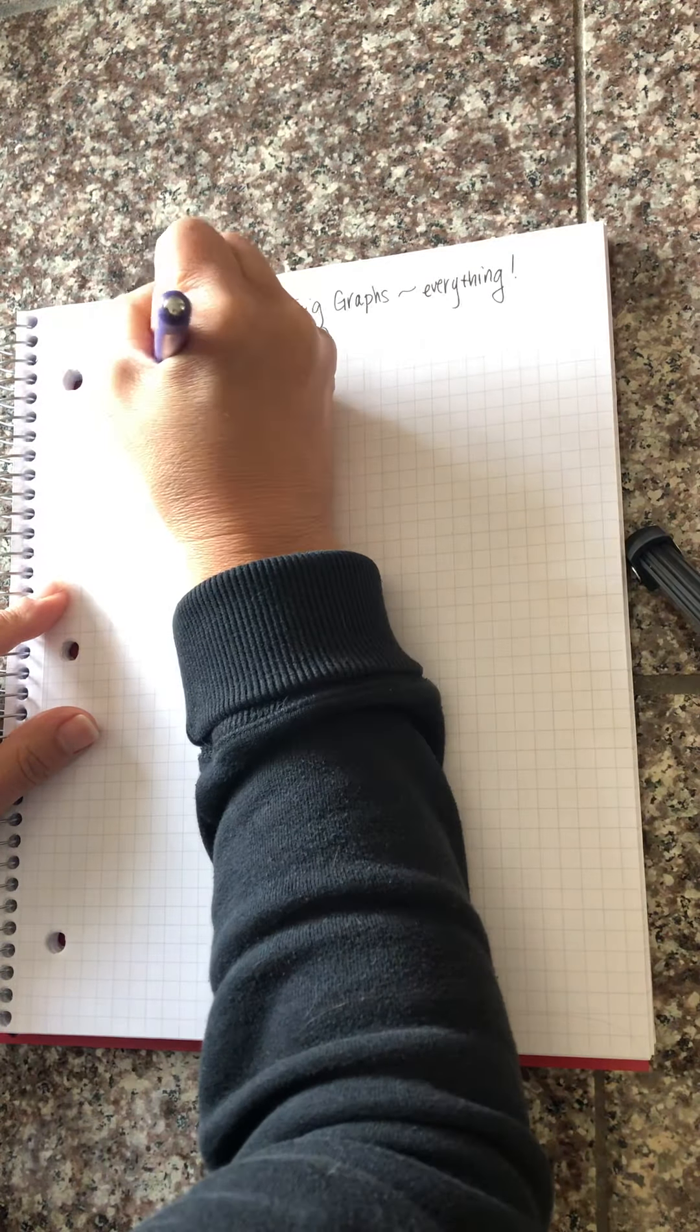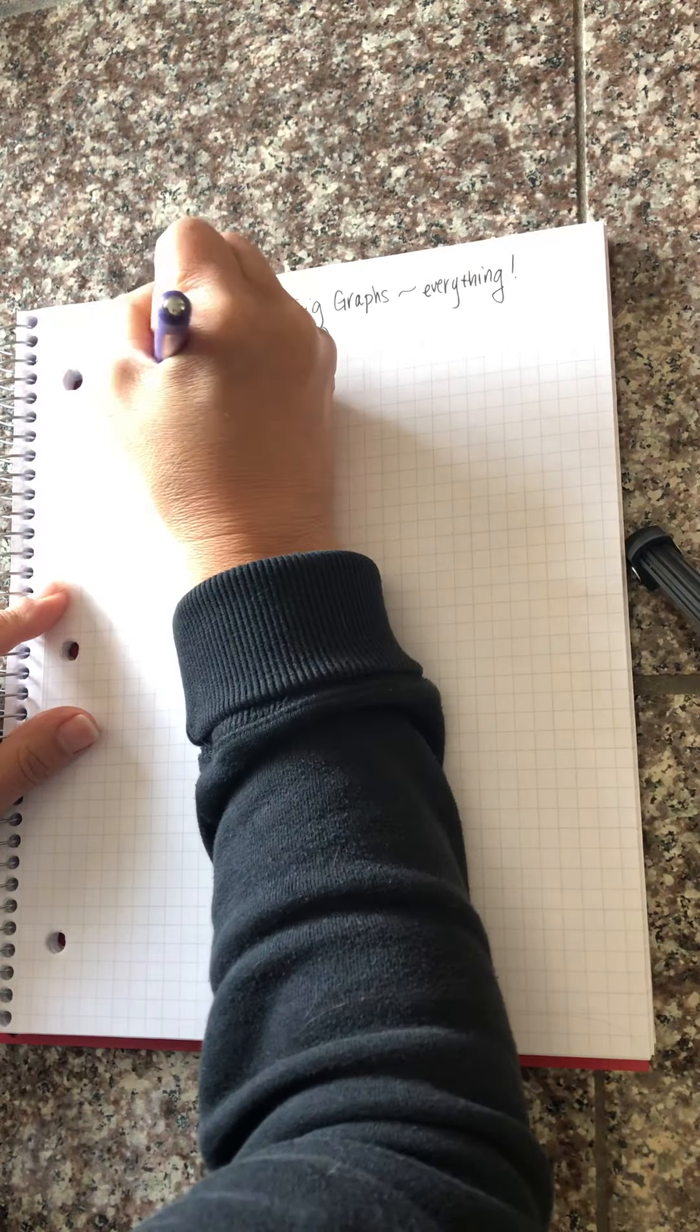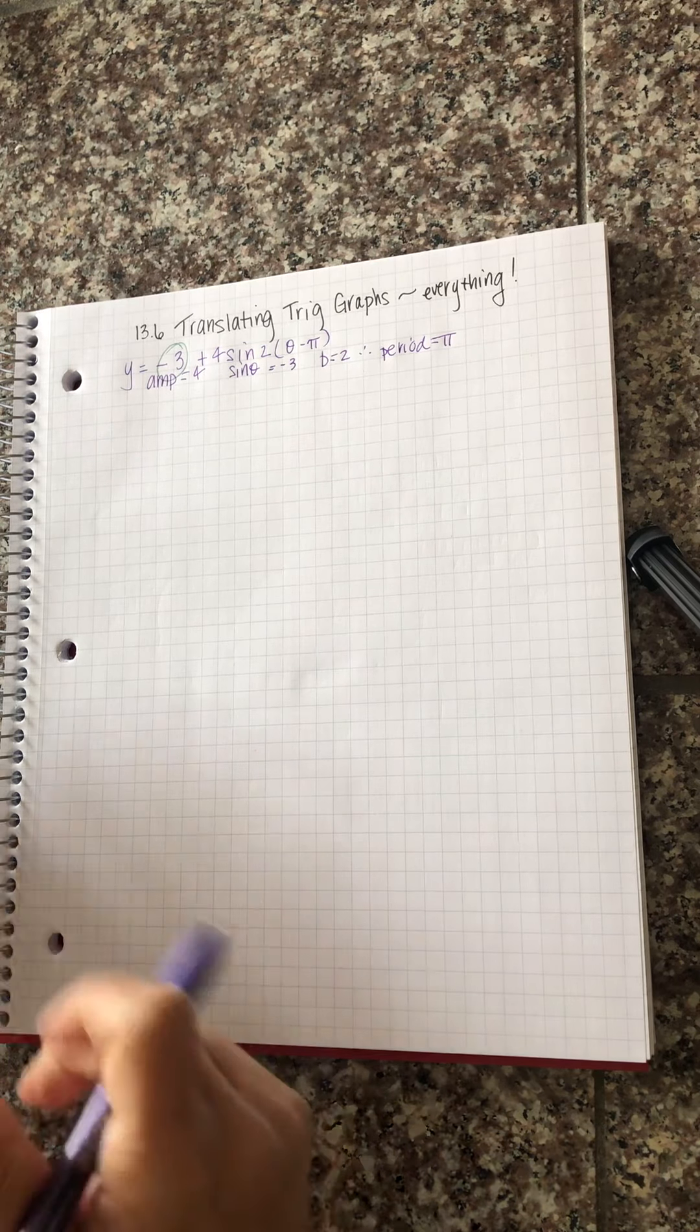And then B is two therefore the period is pi. And then lastly this is the shift right pi units.